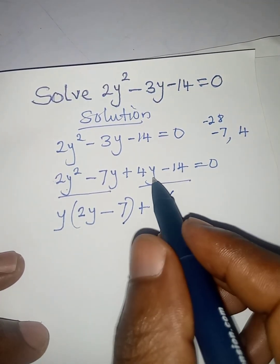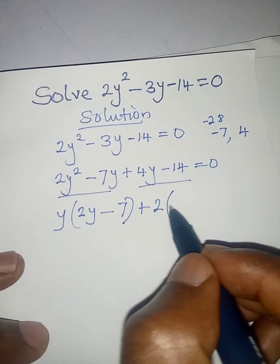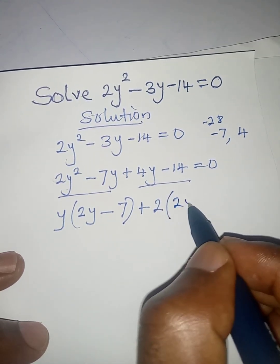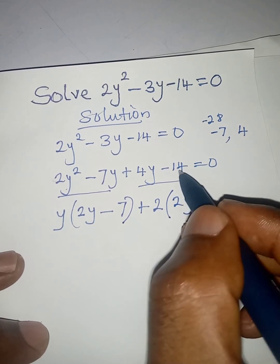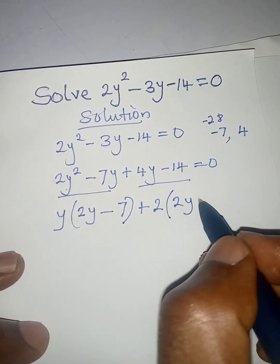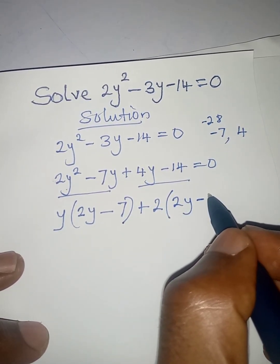4y divided by 2 will give us 2y, then 14 divided by 2 will give us minus 7, and this will be equal to zero.